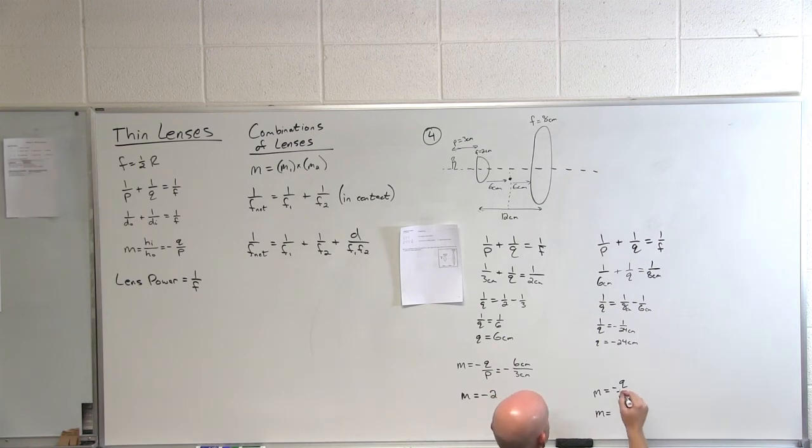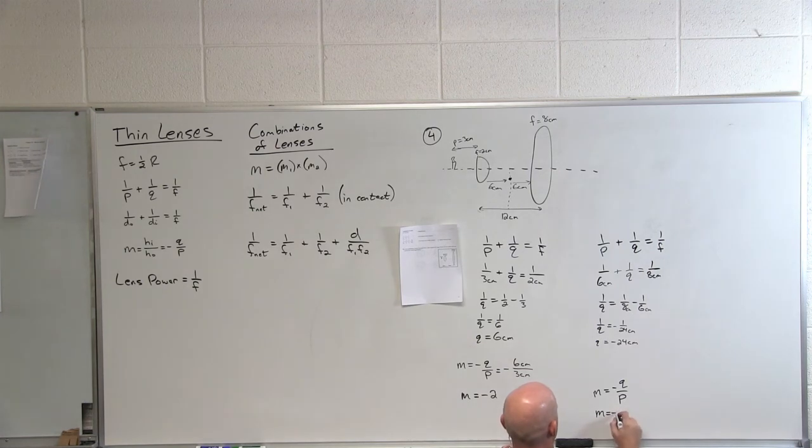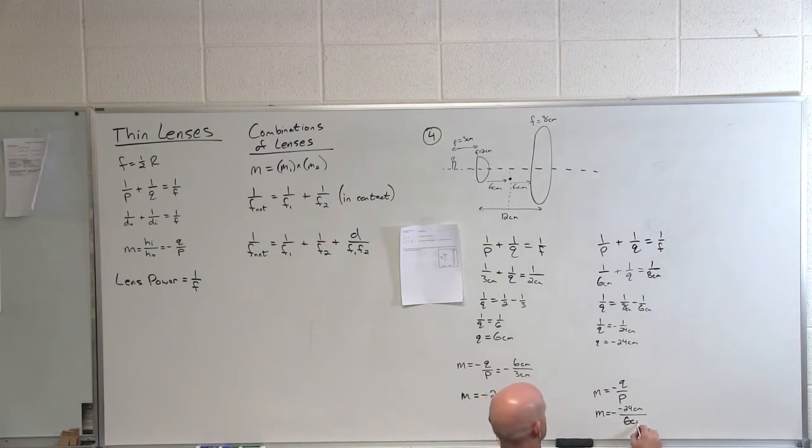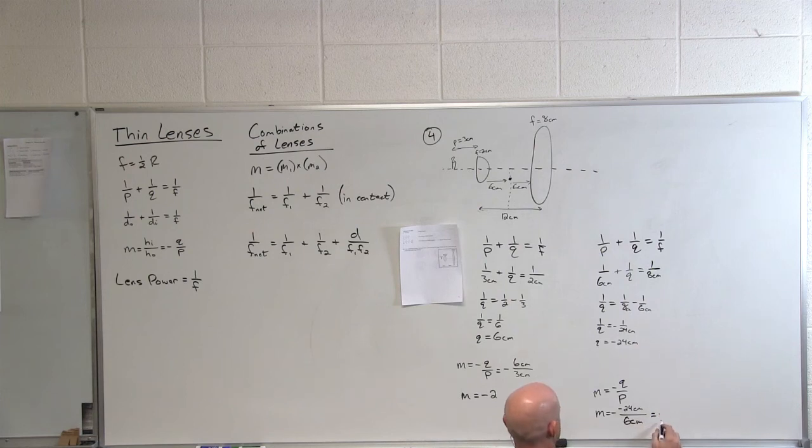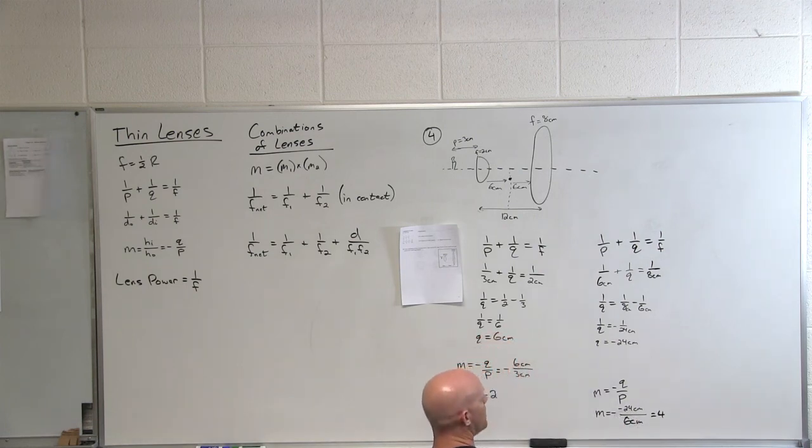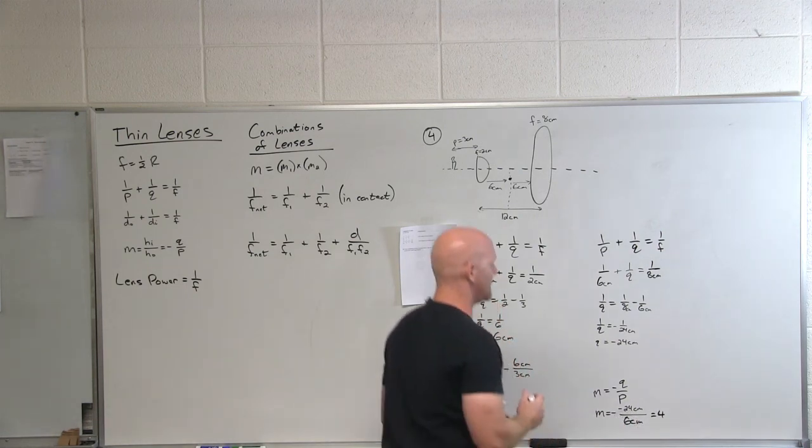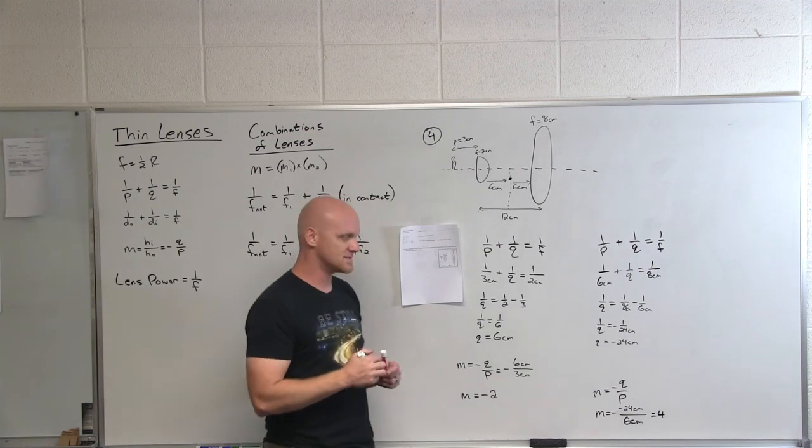So in this case, our Q was negative 24 centimeters and I lost my negative sign already. Negative 24 centimeters. And our P was? Cool. And what did our magnification come out to in this case? Four. And just positive four, right? Negative times a negative. So then what is the overall magnification of this system of lenses, this combination?